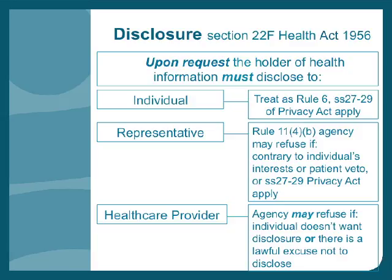Upon a Section 22F request, the holder of health information has to disclose it to the person making the request unless a given set of principles apply. If it's the individual, it's just the same as a personal access request. If it's the representative, the people holding the information may refuse if disclosing would be contrary to the individual's interests or the person has vetoed disclosure of their information. Similarly, if an agency providing or going to provide health services requests information and the individual doesn't want disclosure, the agency holding the information can refuse that request.